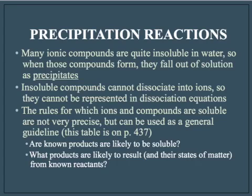There are a few ions and compounds that are universally either soluble or insoluble, but far more of them are situation-dependent. The solubility table gives us a general guideline, and we'll be working with it a lot, so it would be a good idea to become comfortable with it. It allows us to answer whether known products are likely to be soluble, predict what products are likely to occur, and determine whether a product will be aqueous, solid, or perhaps a gas.